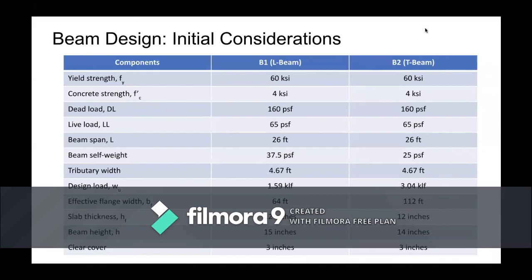Hi, my name is Christine Lei and I will be discussing the beam design for this project. The initial components considered for the design of B1 and B2 are included in the following table. These values include the yield strength, the concrete strength, the dead load and live load, the beam span, the beam self-weight for B1 and B2, the tributary width, the design load, the effective flange width, the slab thickness, the beam height, and the clear cover.